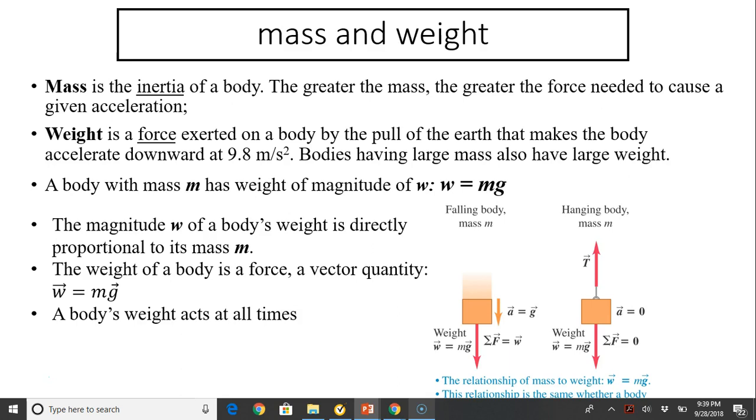So a body with mass m will have a weight of magnitude w. W equals mg. That's how mass and weight relate in magnitude. The magnitude w of a body's weight is directly proportional to its mass m. The more mass you have, the more weight you have.